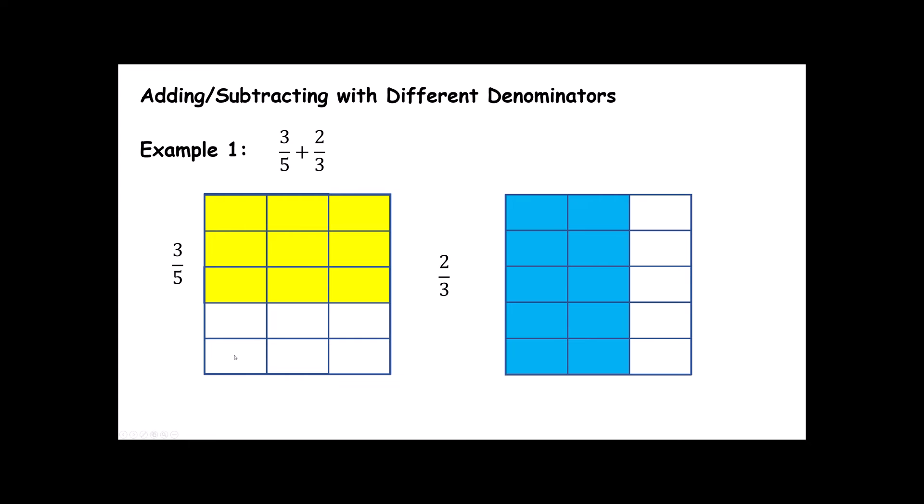Now, when you look at your first object, and you look at your second object, do you notice something about the size of the pieces? All the pieces are now the same size. By taking my fifths and dividing them into 3 sections, and taking my thirds and dividing them into 5 sections, I've created an object where all the pieces are the same size. These 3 out of 5 rows turned into 3, 6, 9 out of 15 small rectangles. 3 of 5 rows is the same as 9 of 15 pieces. 2 of my 3 columns is the same as 10 out of 15 pieces.